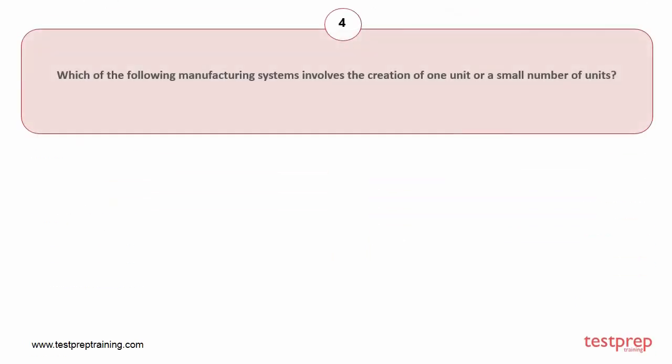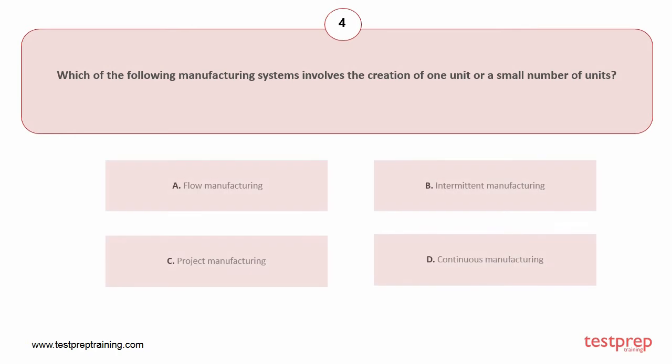Question number four: Which of the following manufacturing systems involves the creation of one unit or a small number of units? Your options are: A) flow manufacturing, B) intermittent manufacturing, C) project manufacturing, D) continuous manufacturing. The correct answer is option C.